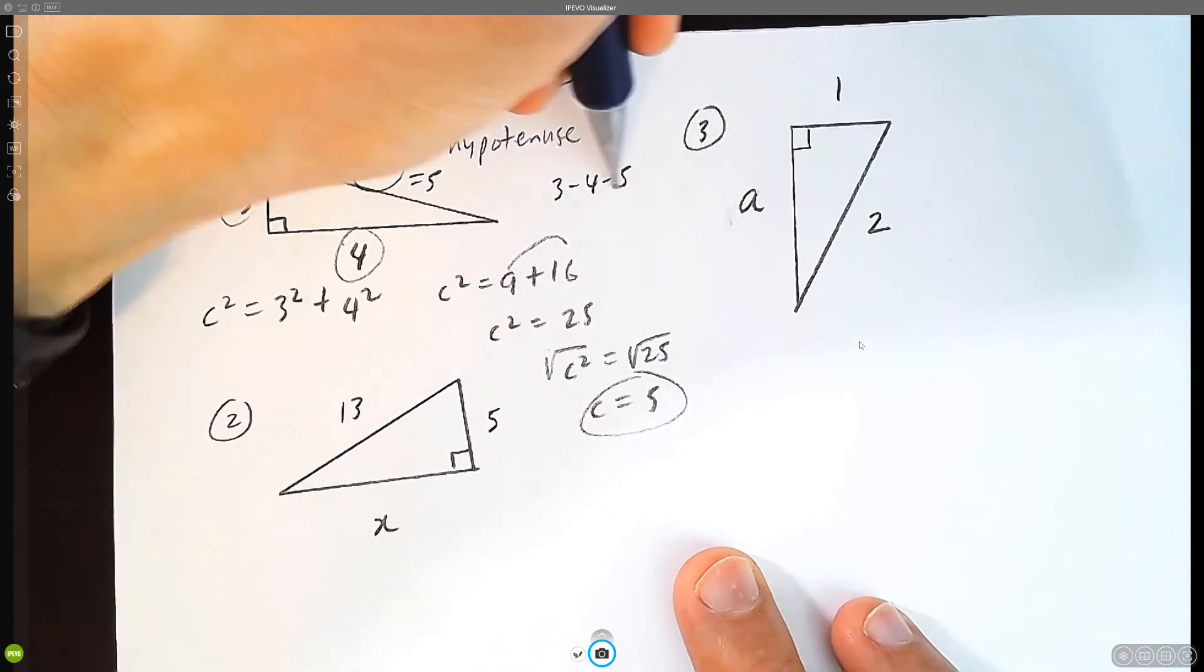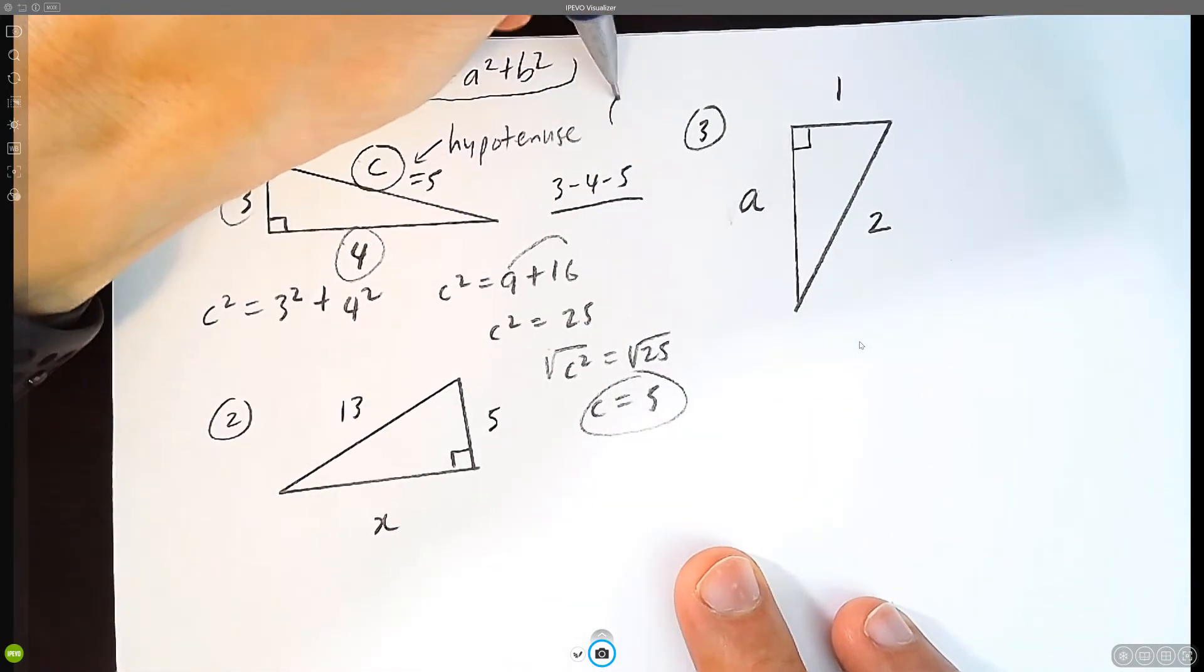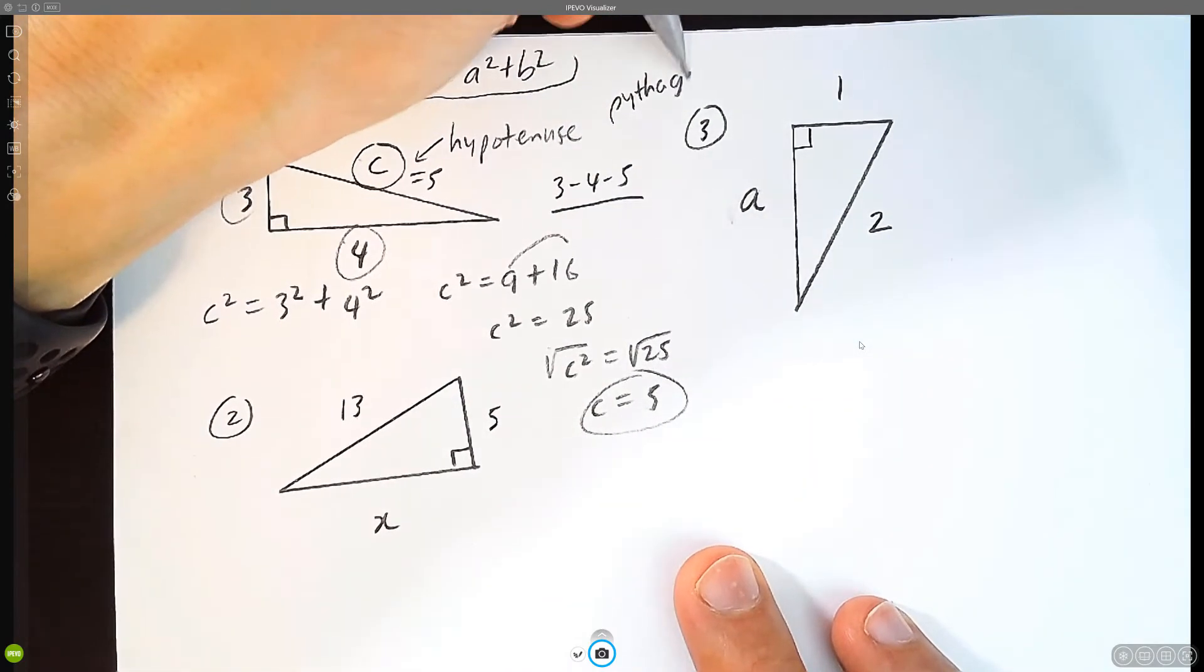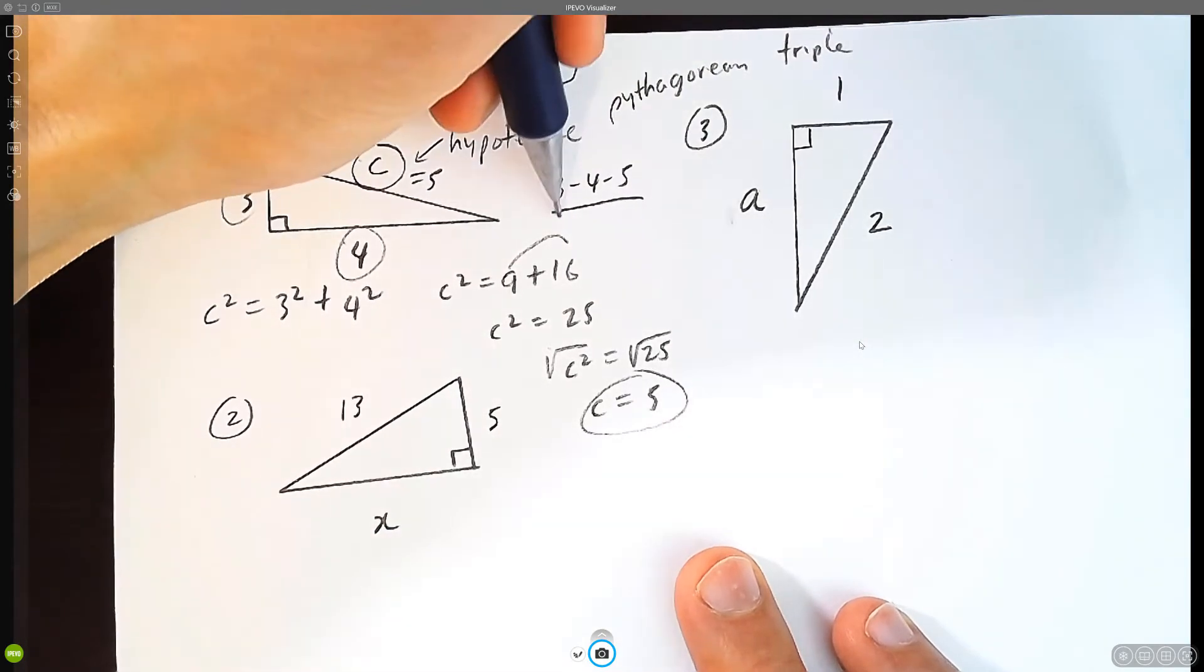Three, four, five. If you memorize this pattern, it comes up a lot. It's called a Pythagorean triple. It's a nice, good triple combo to remember.